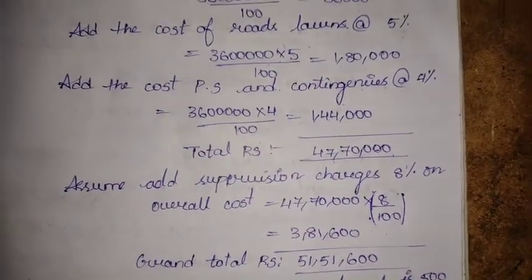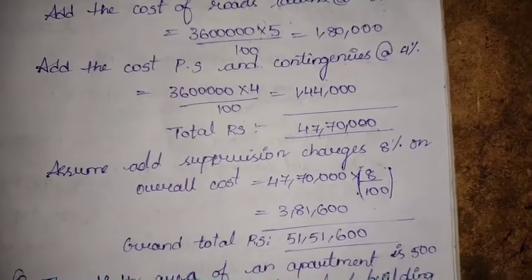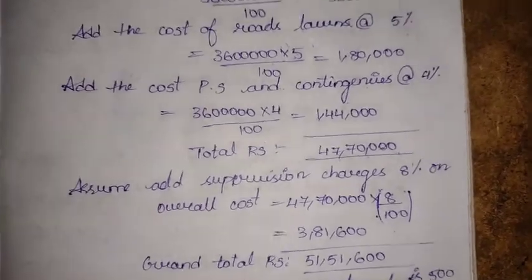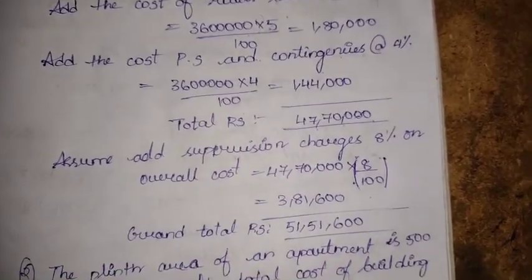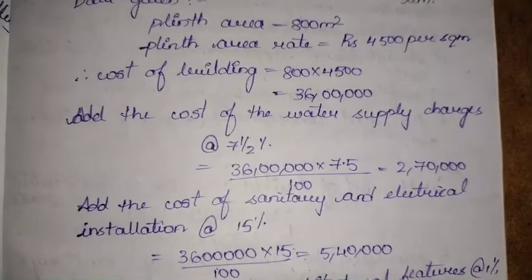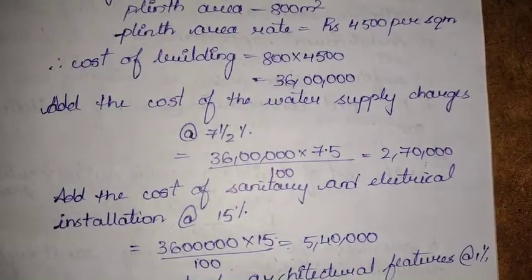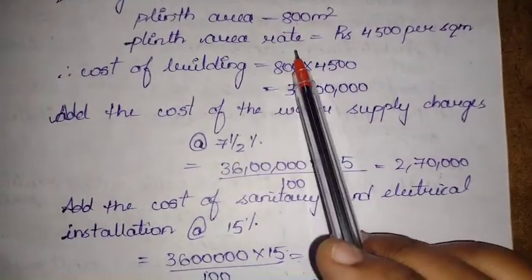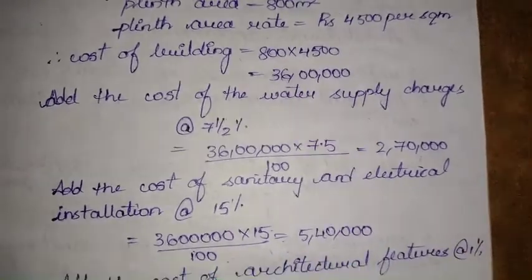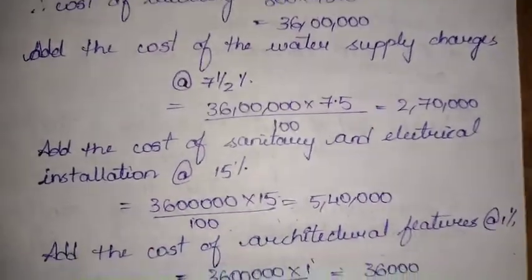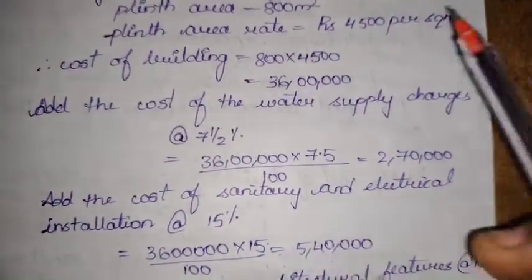We are done with the first example. In the plinth area method, to get the cost of a building we multiply the plinth area by the plinth area rate. The plinth area rate is obtained by taking a similar structure in the same locality with similar specifications. If you haven't watched that video please check it out.